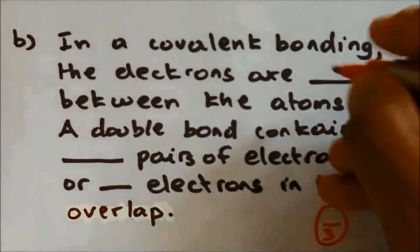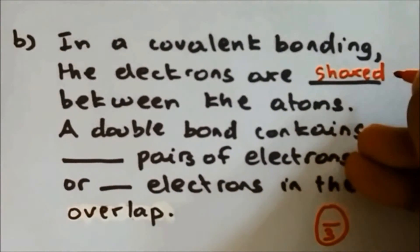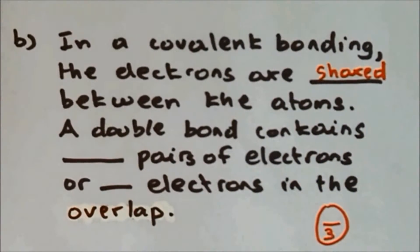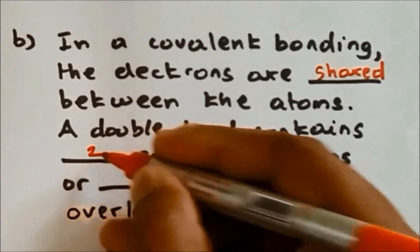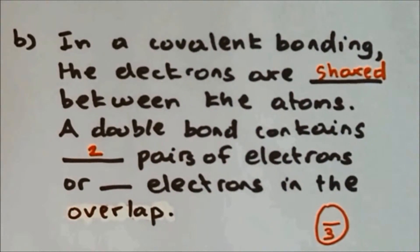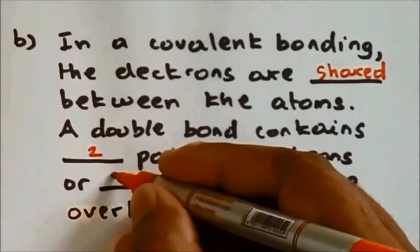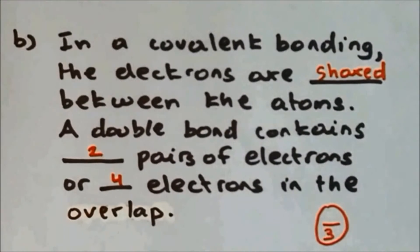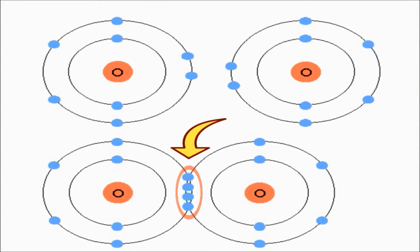Part B: In covalent bonding, the electrons are shared between the atoms. A double bond contains two pairs of electrons, or four electrons in the overlap. Obviously, if there are two pairs of electrons, then in total there are four electrons, and that represents a double bond.